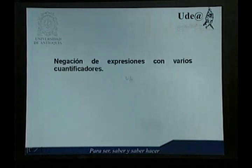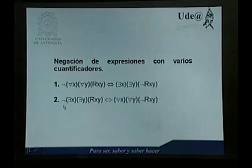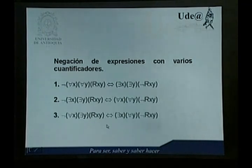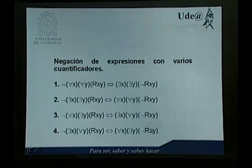¿Cómo se negarían expresiones con varios cuantificadores? Se niegan de la forma siguiente. La negación de para todo X y para todo Y, R sub XY, significa cambiar el cuantificador universal por el existencial, y negar la función proposicional diádica. Negar existe un X, existe un Y tal que R de XY equivale a cambiar los existenciales por universales y negar la función proposicional diádica. Negar una expresión con cuantificador universal seguido de existencial significa cambiar universal por existencial, existencial por universal, y negar la proposición diádica. Y negar existe un X tal que para todo Y, R de XY equivale a para todo X existe un Y tal que no R de XY.